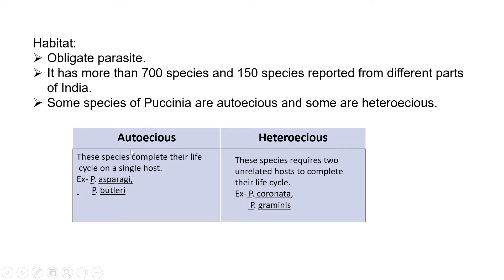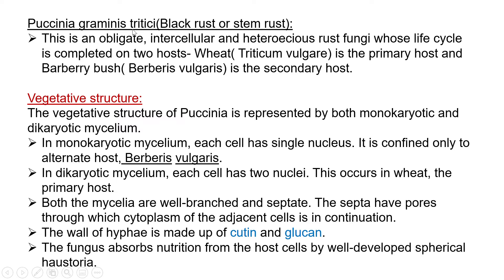Some species of Puccinia are autoecious and some are heteroecious. Autoecious species complete their life cycle on a single host — for example, Puccinia asparagi and Puccinia butleri. Heteroecious species require two unrelated hosts — for example, Puccinia coronata and Puccinia graminis. Puccinia graminis tritici is known as the black rust or stem rust; it is an obligate, intercellular, heteroecious fungus.